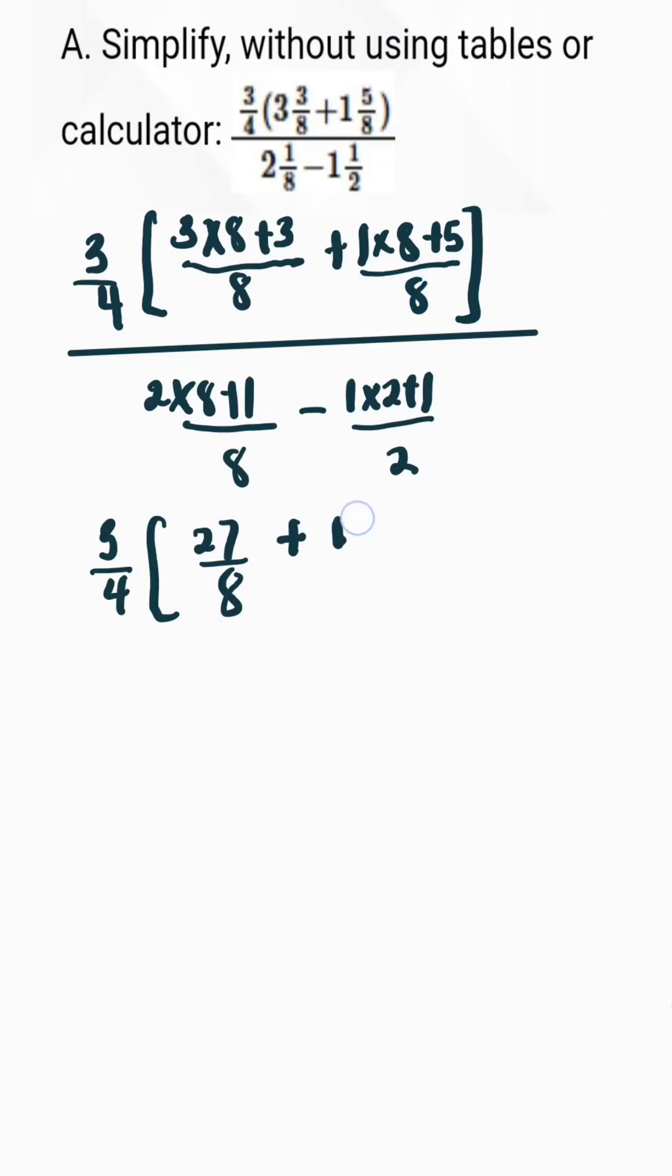This gives 13 over 8. And here we have for the denominator 2 times 8 is 16 plus 1, 17 over 8 minus 3 over 2. Now to make this 3 over 2 be the same denominator.